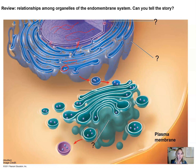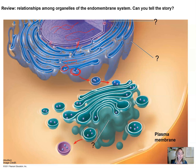The ER glycosylates the protein — meaning it attaches sugar chains to it — and then packages the protein in the form of a transport vesicle. You can see a membrane pinching off and enclosing the protein within. Now the vesicle is traveling to its next destination, which is going to be the Golgi.